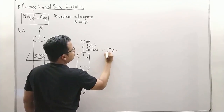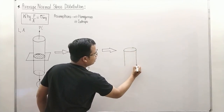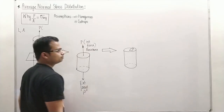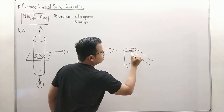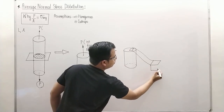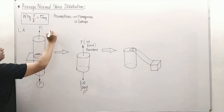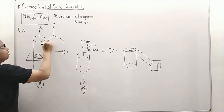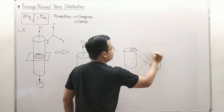Let me just draw this. We are going to pick up a very small element and draw it in 3D. As you can clearly see, this load is actually acting in the Z direction — so this is the Z axis, here we have the Y axis, and here we have the X axis. This element is going to automatically develop a stress in the Z direction.